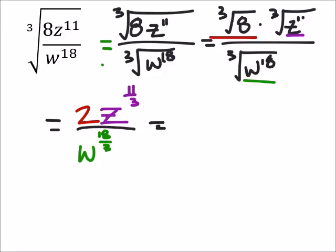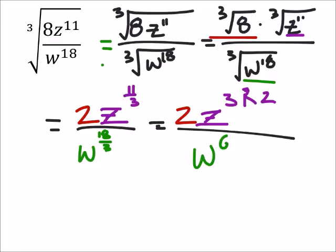This simplifies to 2, and z to the power of 11 thirds is the same as 3 with a remainder of 2. This is divided by w to the power of 18 divided by 3, which is 6.